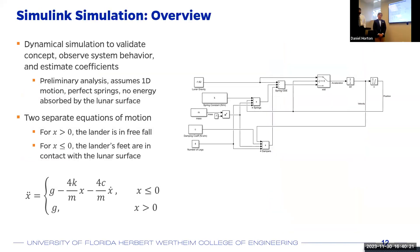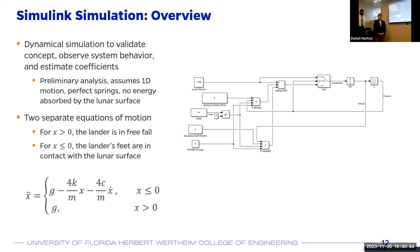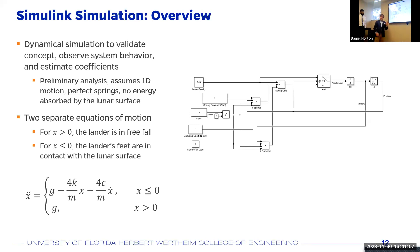To validate our design and determine appropriate spring and damping coefficients, we conducted a dynamic simulation using Simulink. We assumed 1D motion, perfect springs, no energy dissipation by the lunar surface, and a perfectly flat lunar surface. That left us with two equations of motion. For X greater than zero, the lander is above the lunar surface in freefall, with only gravitational acceleration acting on it. For X less than or equal to zero, the lander's feet are in contact with the lunar surface, and values less than zero indicate the springs and dampers are being compressed.